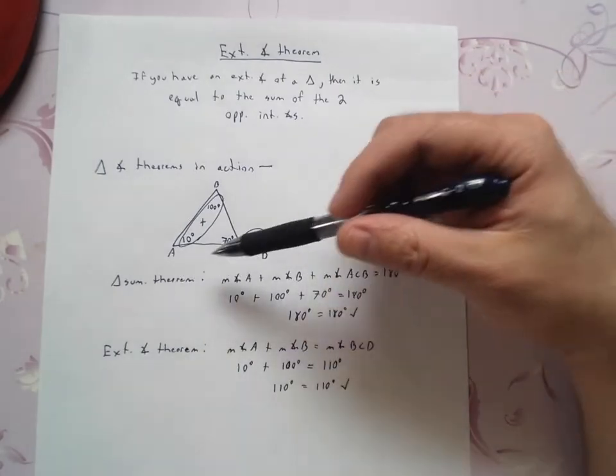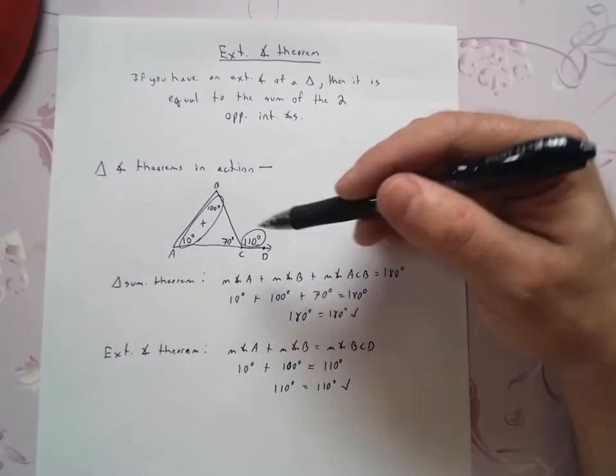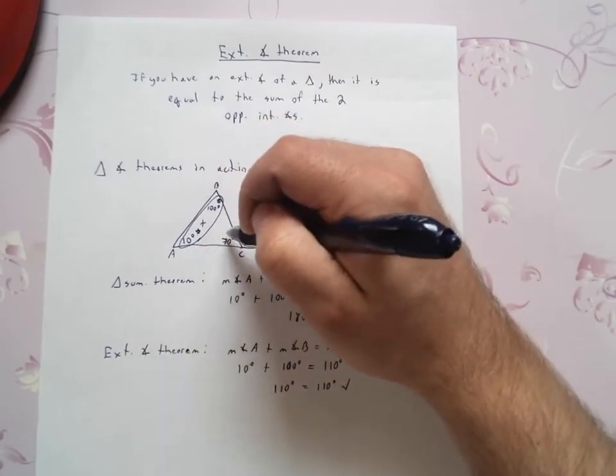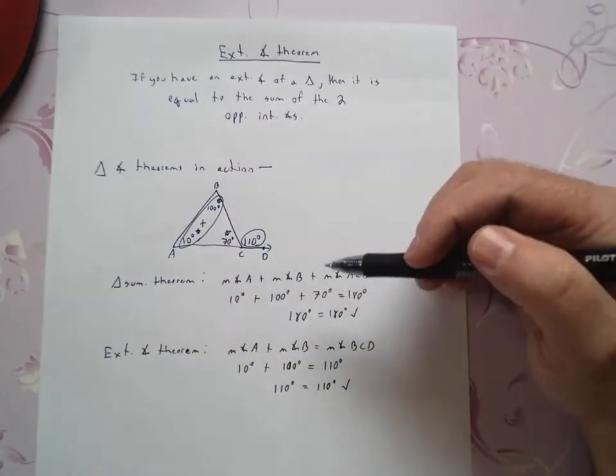And then right here, reviewing that triangle sum theorem you saw on the previous page. If I add all three of these angles inside, take this angle and this angle and this angle and add together, it should be 180 degrees.